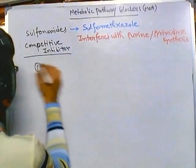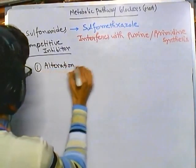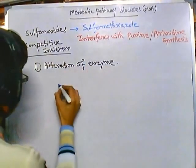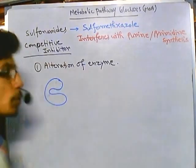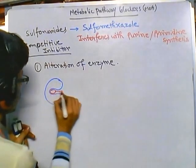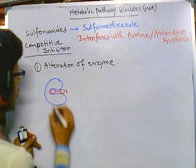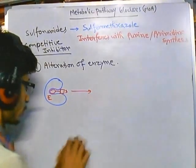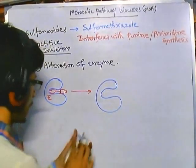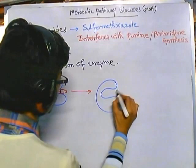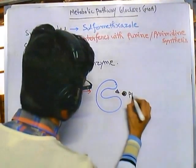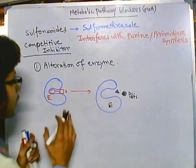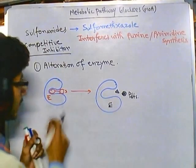This is the first way: alteration of the enzyme. Here we have the enzyme with a groove where the substrate binds. The substrate binds with the enzyme forming an enzyme-substrate complex, which is then converted into products. That's how it works in the normal case. Now, if bacteria alter this enzyme, the result of that alteration changes the binding properties.